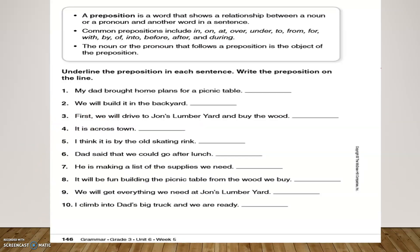So, now you can open your grammar booklet, page 146. And let's solve this together. I will solve the first one with you, as usual. And you'll solve the other nine alone. They're asking you to underline the preposition in each sentence and write it down on the line. Super easy. My dad brought home plans for a picnic table. Where is the preposition? Yes. The preposition is for. So, they said underline the preposition and write it down on the line.